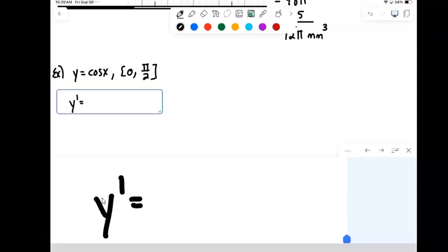So y prime, we need to compute that, derivative of cosine, which would be negative sine x.